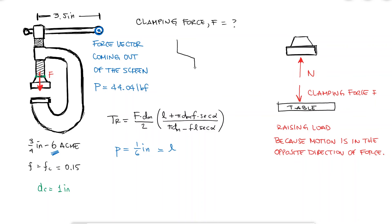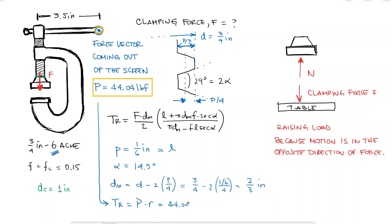The acme profile tells me that the angle alpha is equal to half of 29 degrees. The nominal diameter 3 fourths of an inch is usually the major diameter, and therefore, the mean diameter would be equal to the major diameter minus 2 times 1 fourth of a pitch, 1 on each side of the screw. The torque that I'm using to raise the load would be equal to the force that I'm using at the end of the handle of 44.04 pounds times the length of the handle. I know that this torque will overcome the force required to raise the load as well as the friction between the collar and the screw.